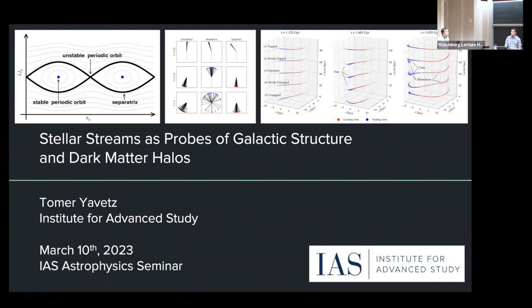Thank you everybody for coming. It's my pleasure to introduce Dr. Toma Javits, who has been here for five months as a member of the Institute. Toma was formerly of this parish - he did his undergraduate degree here at Princeton, and then decided to leave and do things like make money and have a family, move into the so-called real world, before coming back to do his PhD at Columbia.